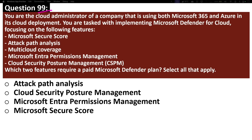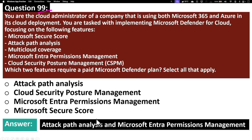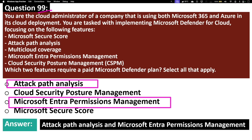Question 99. You are the cloud administrator of a company using both Microsoft 365 and Azure. You are tasked with implementing Microsoft Defender for Cloud, focusing on features including Microsoft Secure Score, attack path analysis, multi-cloud coverage, Microsoft Entra Permissions Management, and cloud security posture management (CSPM). Which two features require a paid Microsoft Defender plan? The correct answers are attack path analysis and Microsoft Entra Permissions Management. Details on Microsoft Defender for Cloud were covered in question 13.